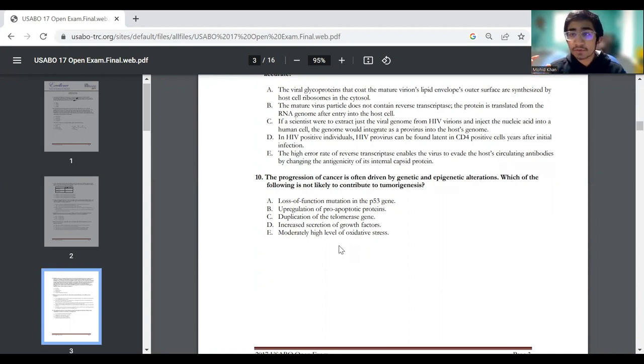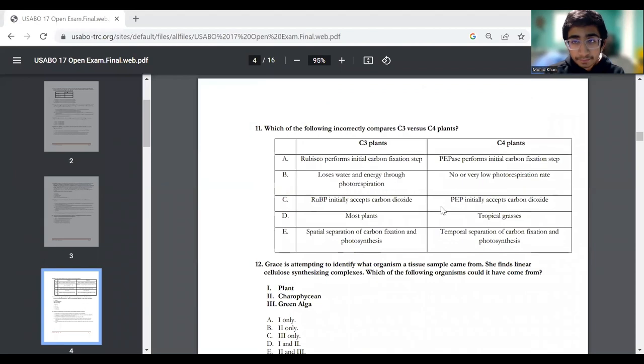If it's pro-apoptotic, that means it's going to stimulate apoptosis. And apoptosis is the reaction in which programmed cell death occurs. So if we have cell death, that means tumors will not form. The cells are dying. So that's why the answer would be B. Because if the cells are dying, then tumorigenesis will not happen. We have C, D, and E, but they don't even make sense to this answer. So it is B.